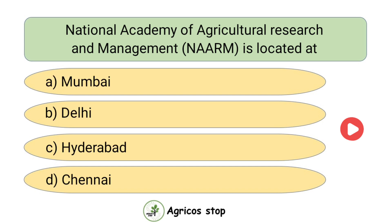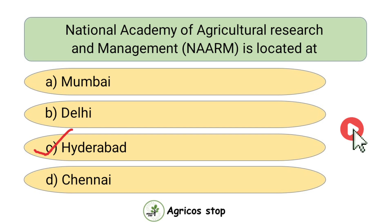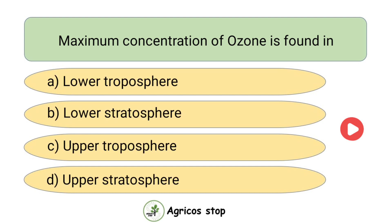National Academy of Agricultural Research and Management (NAARM) is located at — options are Mumbai, Delhi, Hyderabad, and Chennai. The answer is Hyderabad. NAARM is located at Hyderabad.